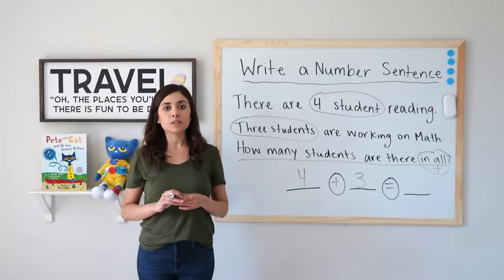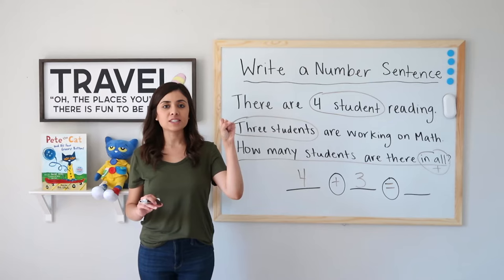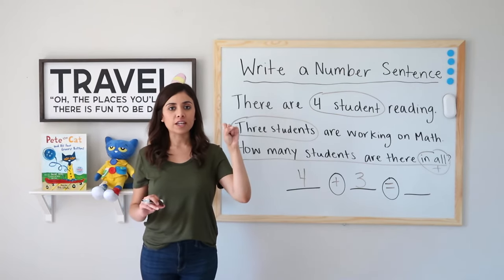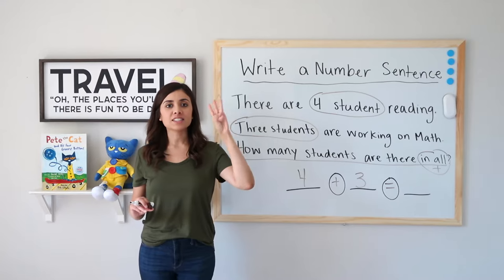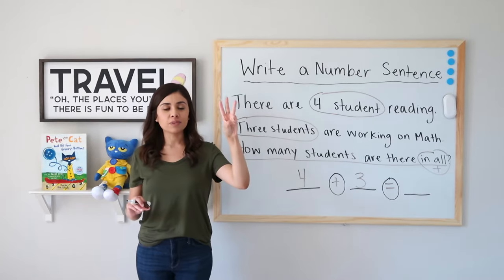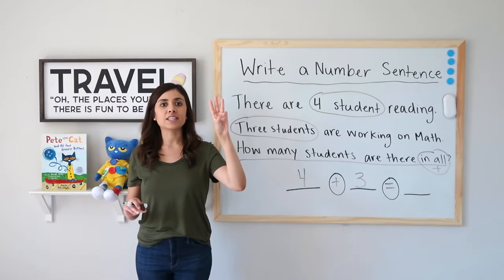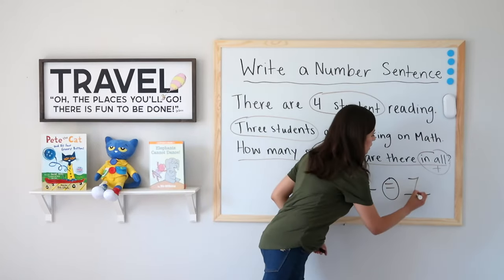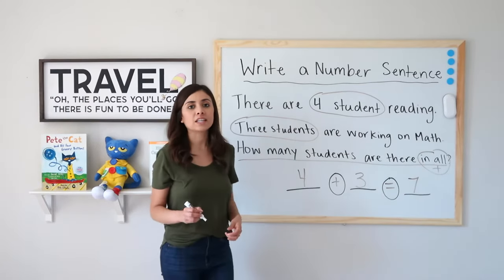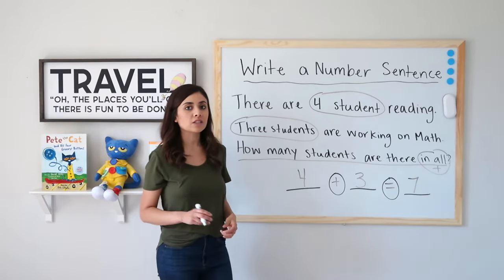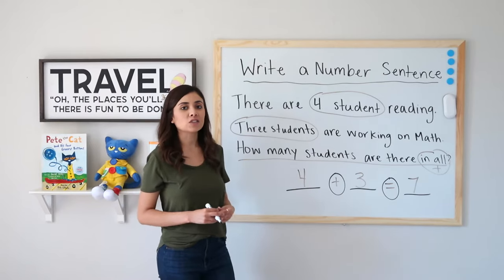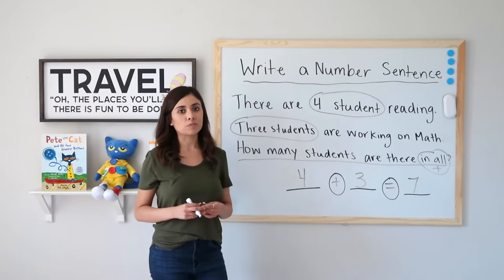Let's see what four plus three equals. Hold a fist and say four, and we're going to jump up three. Four, five, six, seven. Four plus three is seven. Seven is my whole, and it is also called the sum, because the sum is the answer to my addition problem.